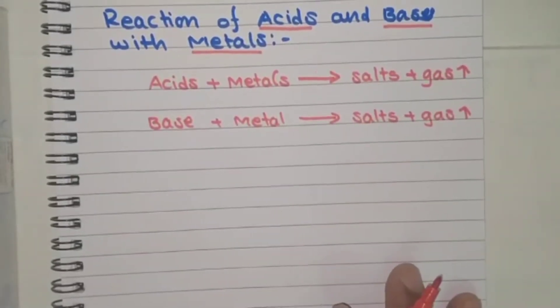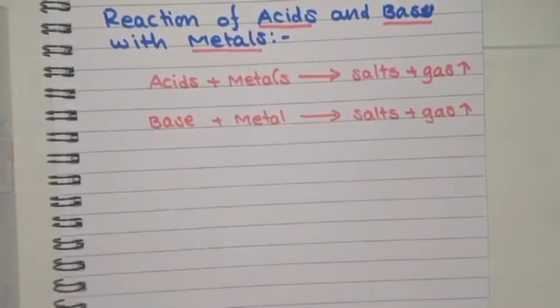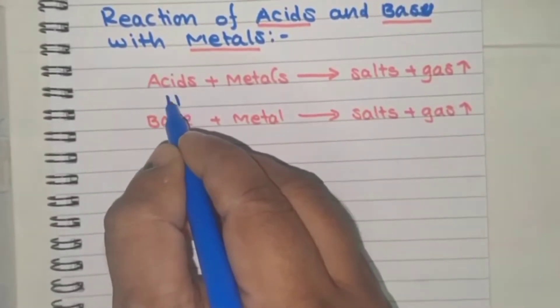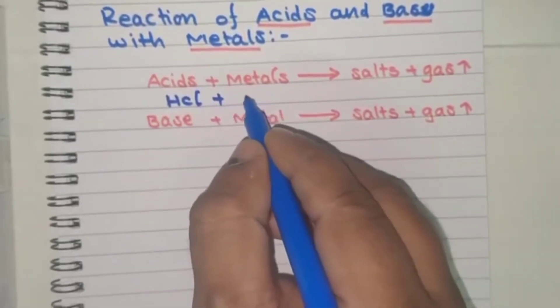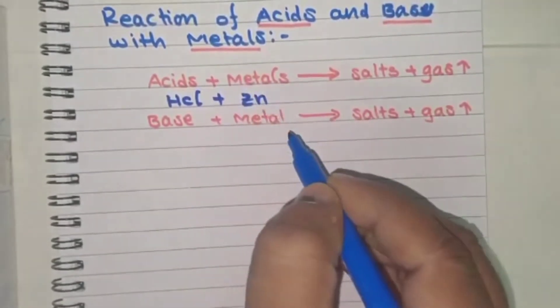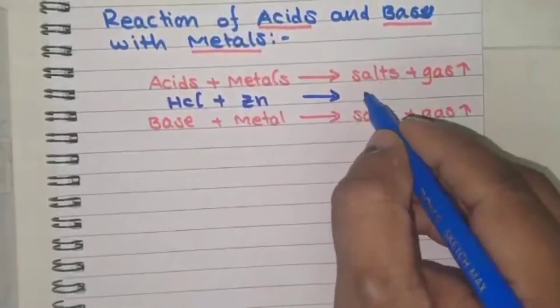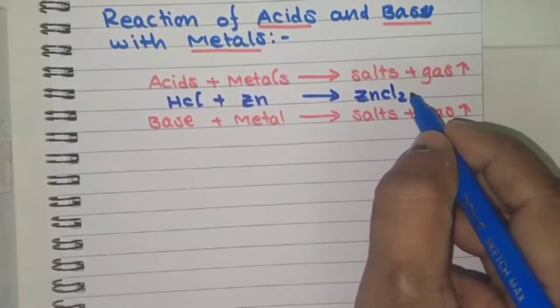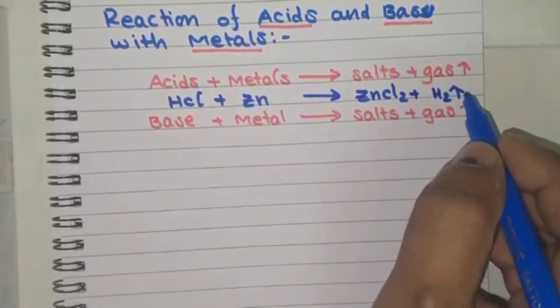Let's see the example. For example, in this acid, strong acid diluted hydrochloric acid, HCl plus with metal, we'll take some pieces of zinc pieces to form ZnCl2, zinc chloride salt will be formed and some gas is involved, that gas is hydrogen gas.